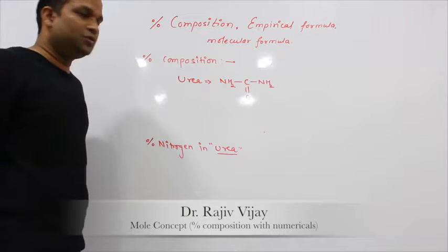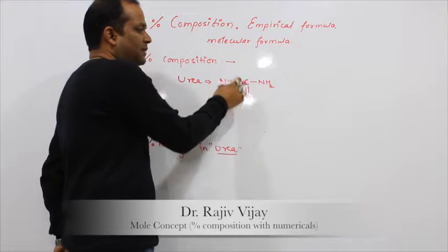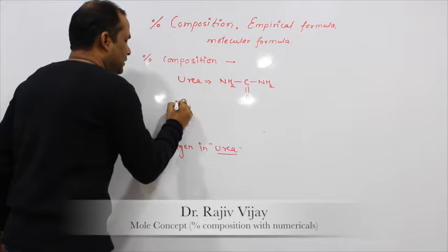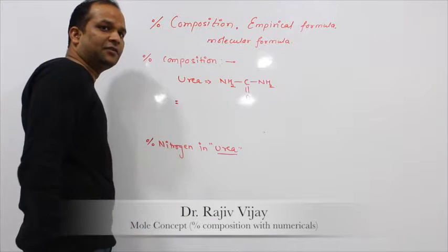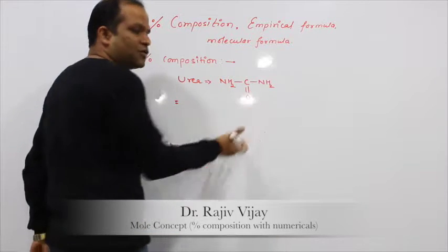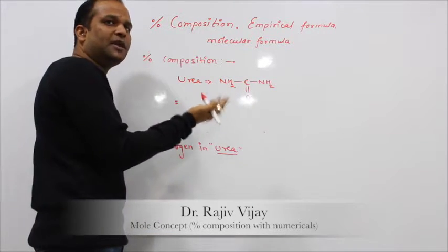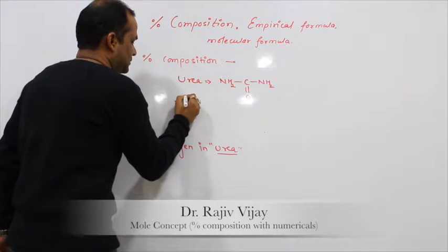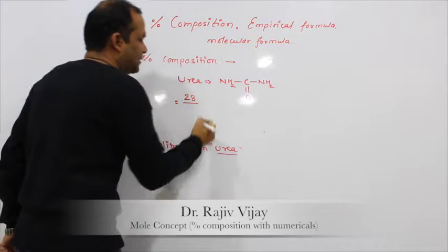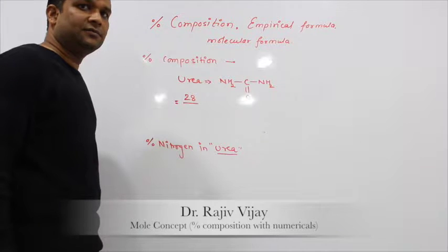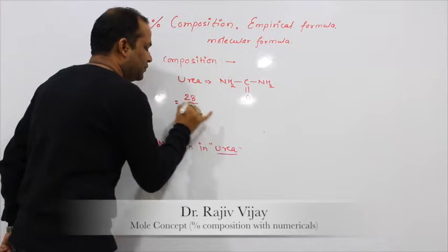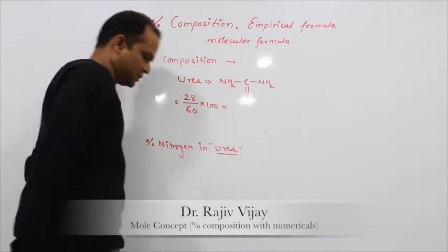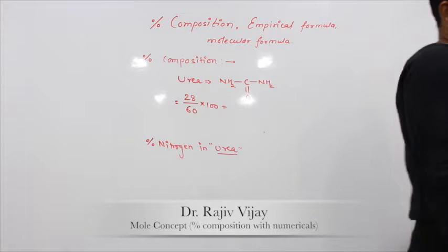How many nitrogen are there? 2. How many hydrogen are there? 4. How many carbon? 1. How many oxygen? 1. So what is the amount of nitrogen in this formula? If you take one mole or one molecule of urea, then in AMU — that is atomic mass units — the amount of nitrogen is 28, divided by the mass of urea which is 60, into 100.